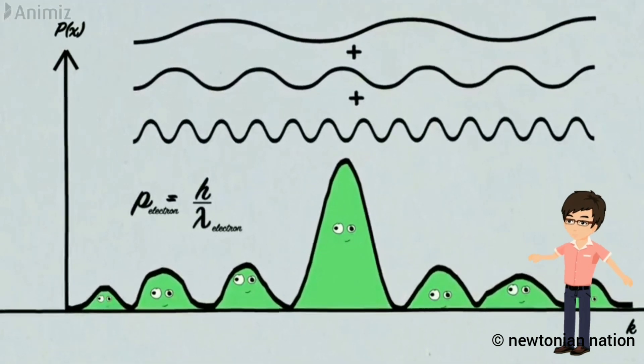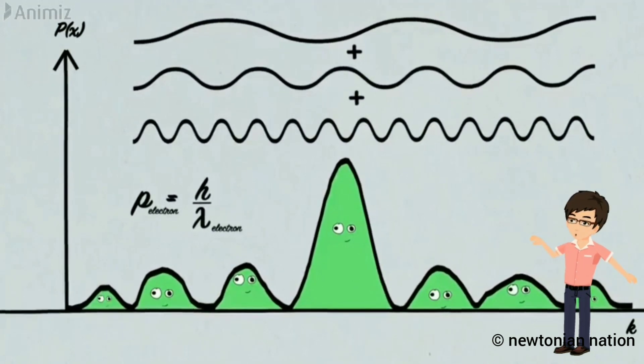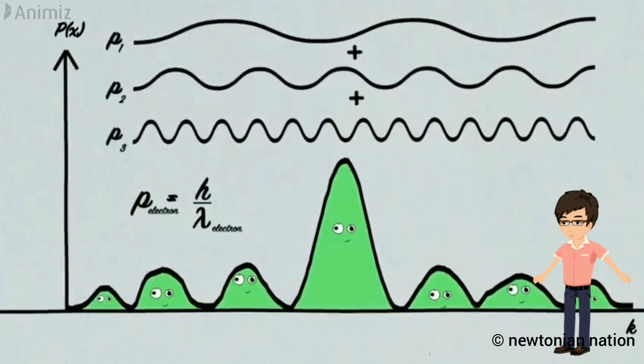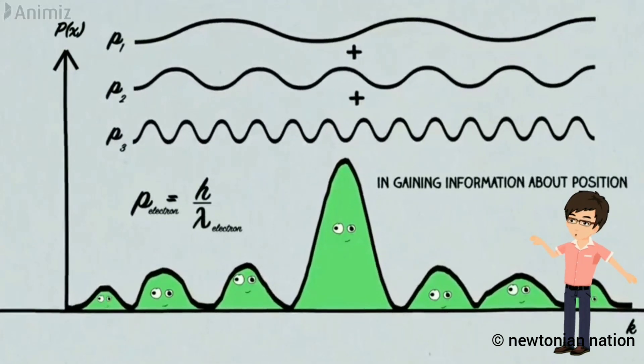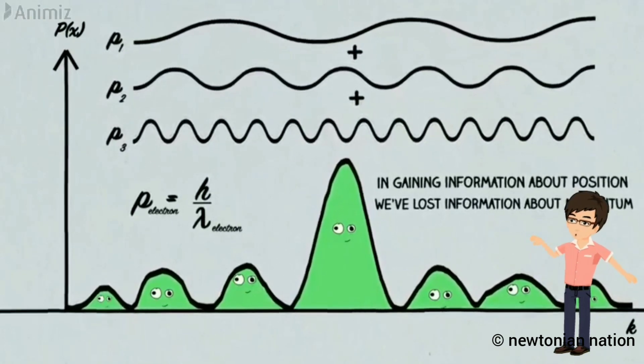I told that wavelength and momentum are interchangeable. So, we don't have one momentum value. We have more momentum. But, getting the information of the position, we lost the information of the momentum.